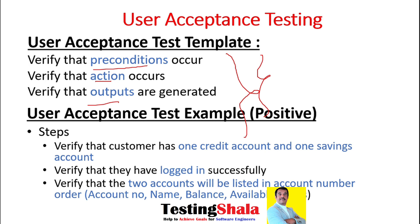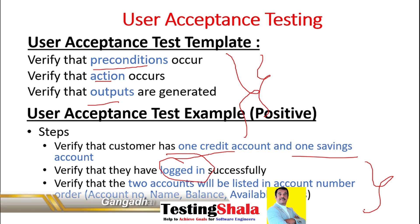Positive test case: verify that the customer has two credit accounts and one savings account and is able to log in successfully. Then the customer should be able to see both account details with the balance and available funds. That is one example for the acceptance criteria.